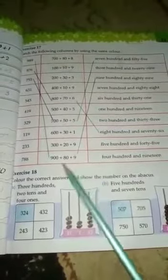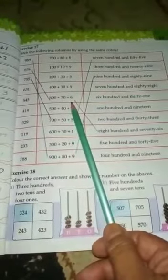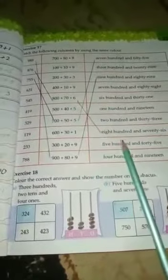First is 989. Then you will match this expanded form, 900 plus 80 plus 9, and then their names, nine hundred and eighty-nine. Then 876, 800 plus 70 plus 6 is their expanded form, then you will match their names, eight hundred and seventy-six.